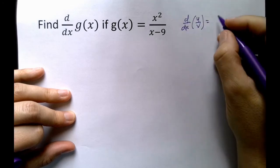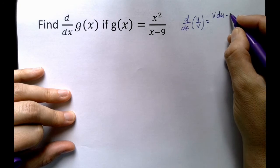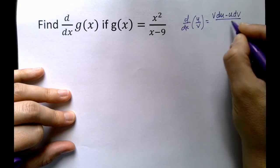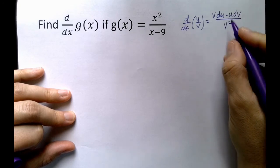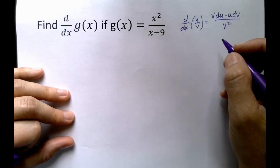Okay, so the quotient rule is v du minus u dv over v squared. Make sure your v's are pointy and your u's are curvy, you don't want to misread your own handwriting.